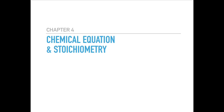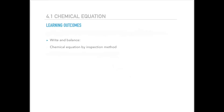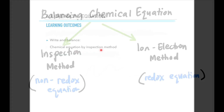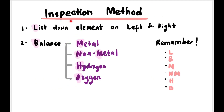Hi guys, welcome back to the channel. Today we're going to learn Chapter 4, Chemical Equations, focusing on 4.1 Chemical Equations. At the end of this lesson you should be able to write and balance a chemical equation by inspection method. Balancing chemical equations can be done by two methods: inspection method for non-redox equations, and for redox equations we use the ion-electron method.